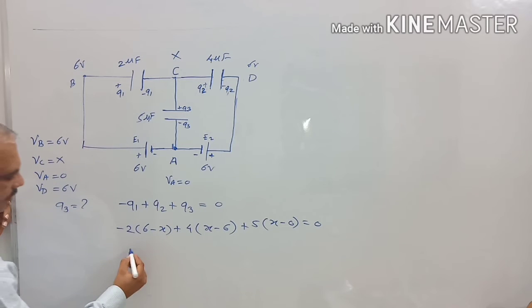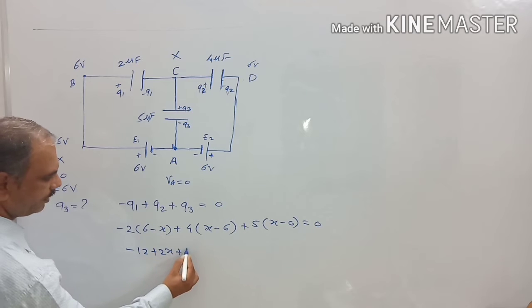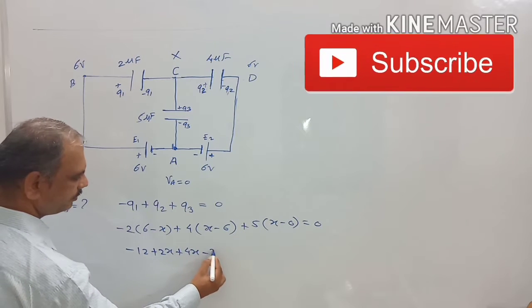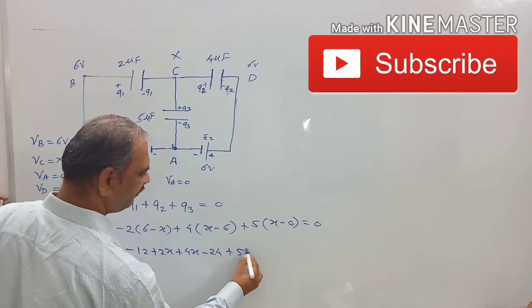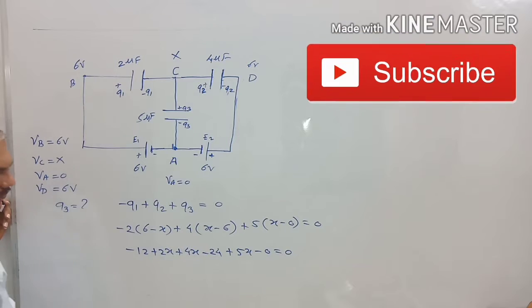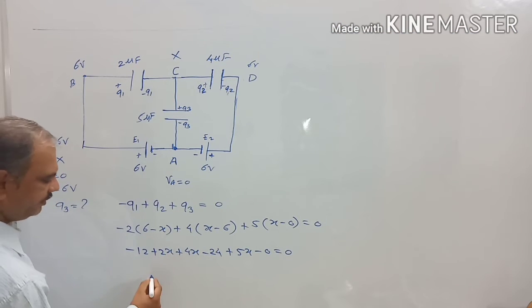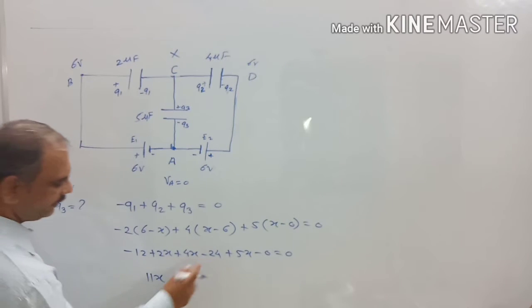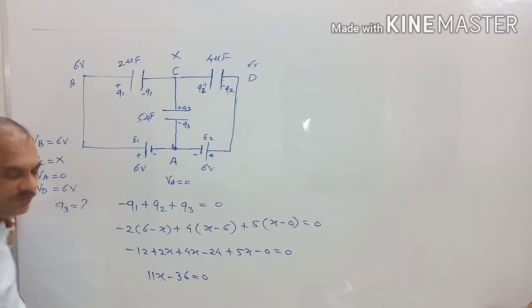Then, minus 12 plus 2X plus 4X minus 24 plus 5X minus 0 equal to 0. Then, 5X plus 4X plus 4X plus 2X, that is 11X minus 12 minus 24, that is minus 36 equal to 0.